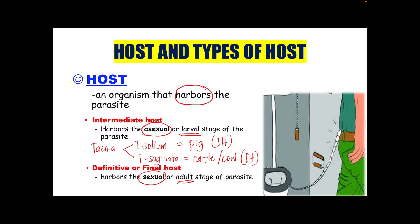In taeniasis, the definitive host is the human individual, as we carry the adult stage of the parasite. Another example is malaria, where the parasite is Plasmodium. In malaria, the adult stage of the parasite is carried by the mosquito and the larval stage is carried by humans. So in Plasmodium, the definitive host is the mosquito, whereas the intermediate host is the human. That is how we differentiate intermediate host and definitive host.